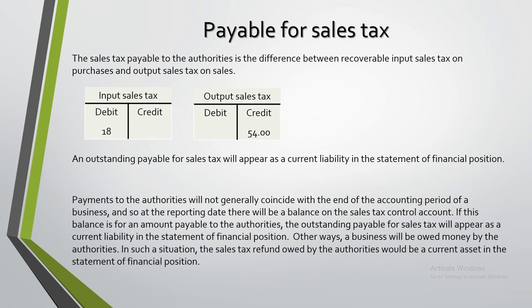Payments to authorities will generally not coincide with the end of the accounting period of the business. And so, as of the reporting date, there will be a balance on the sales tax control account. If the balance represents an amount payable to the tax authorities, the outstanding payable for the sales tax will appear as a current liability in the statement of financial position.